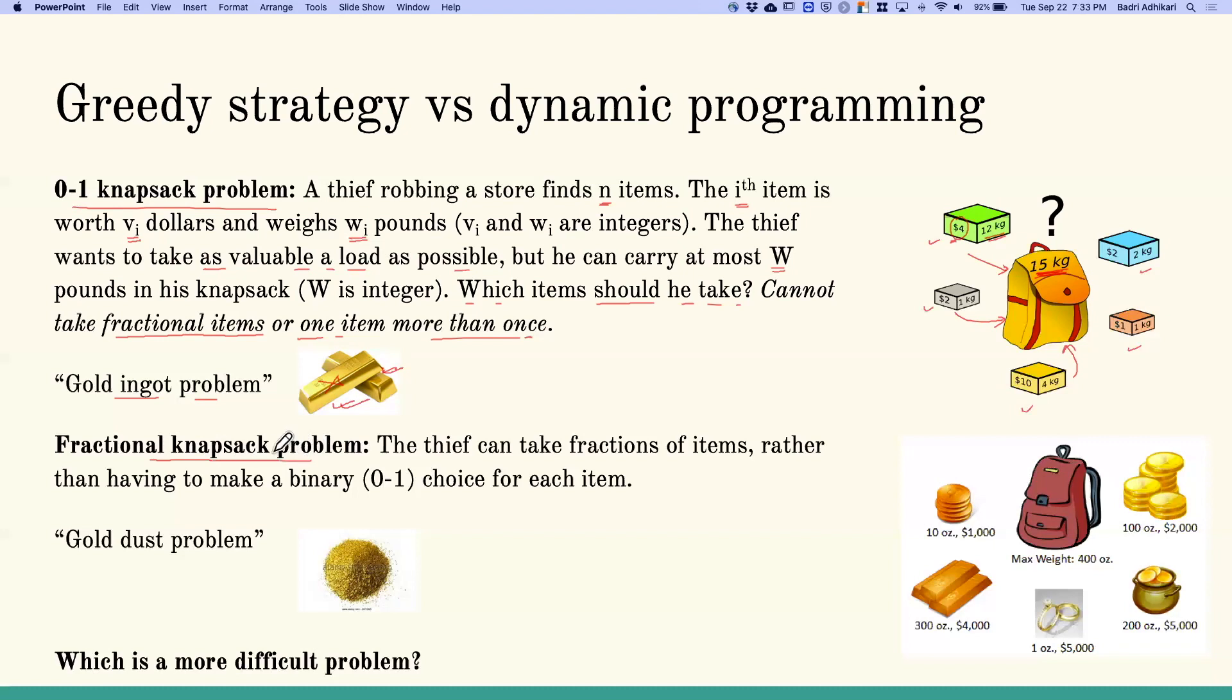The fractional knapsack problem is slightly different. Imagine the same thief trying to rob a store with items worth certain amounts - for example, coins worth $1,000, gold ingots worth $4,000, and so on. But in this case, the thief can take fractions of items. If certain items are more valuable, the thief can decide to take a portion. In a way, this is like a gold dust problem where you can take as much portion as you want.